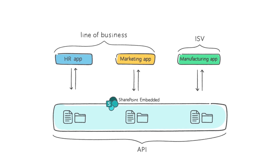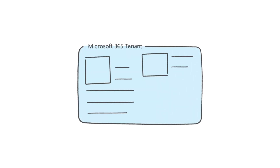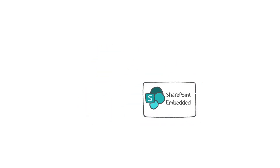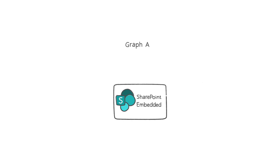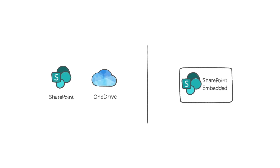SharePoint Embedded is a headless, API-only version of SharePoint, and it works by creating a dedicated storage partition within your Microsoft 365 tenant specifically for your app. This partition is controlled by the app that created it via the Graph API and is managed through the familiar Microsoft 365 admin capabilities. Importantly, this partition is logically separate from other storage capabilities like SharePoint Online and OneDrive, and doesn't include a user experience layer.